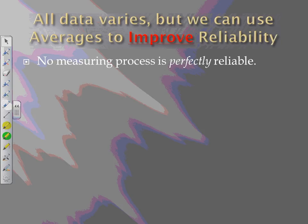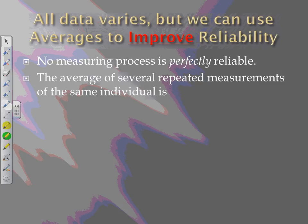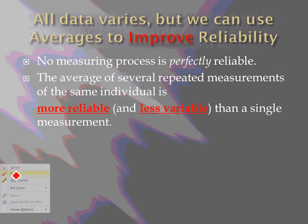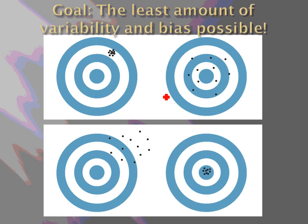All data varies, but we can use averages to improve reliability. No measuring process is perfectly reliable. Even using rulers, we don't know if the ruler is reliable. But what we can do is take the average of several measurements of the same individual and it is going to be more reliable. So we use averages a lot in this class. Be prepared to just say the answer is to use an average. Very important with statistics, averages. We don't want to use just individual responses. Instead, we will take the average of responses to get a better statistic.